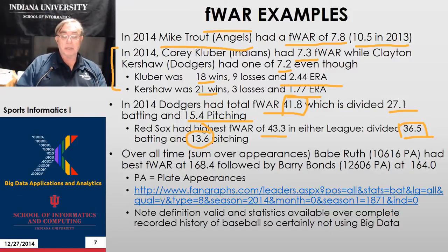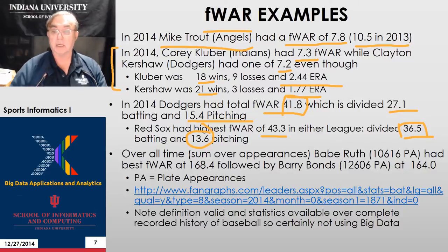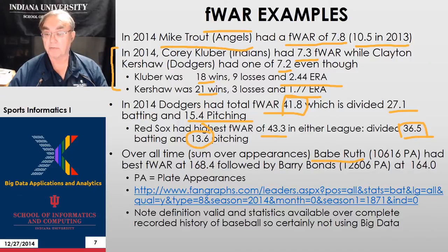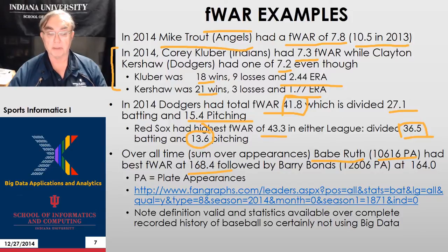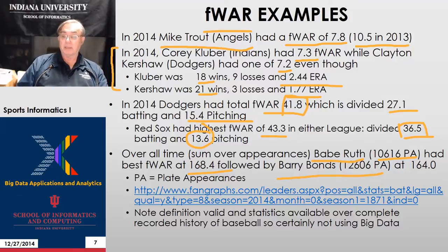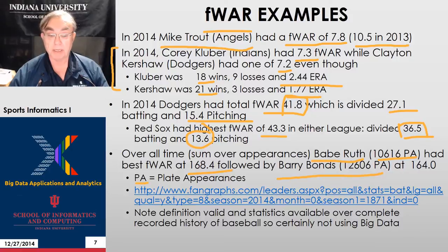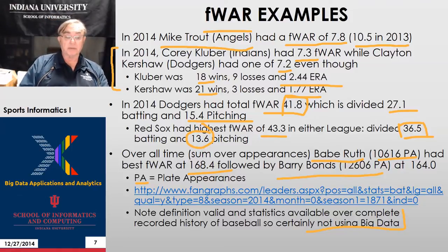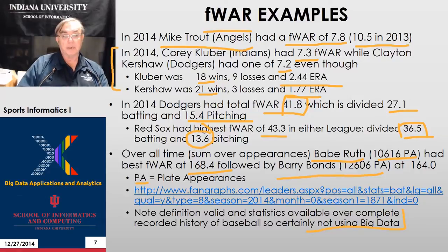If you look at career WAR totals, you favor players who have played the longest. Babe Ruth had 10,616 plate appearances and a FanGraphs WAR of 168.4. A more recent player, Barry Bonds, with almost 2,000 more plate appearances had a somewhat lower F-WAR. This is almost necessarily little data, since we can calculate it for Babe Ruth who was batting long before any video data existed — one advantage of keeping to classic, clean statistics applied across 140 years of baseball.